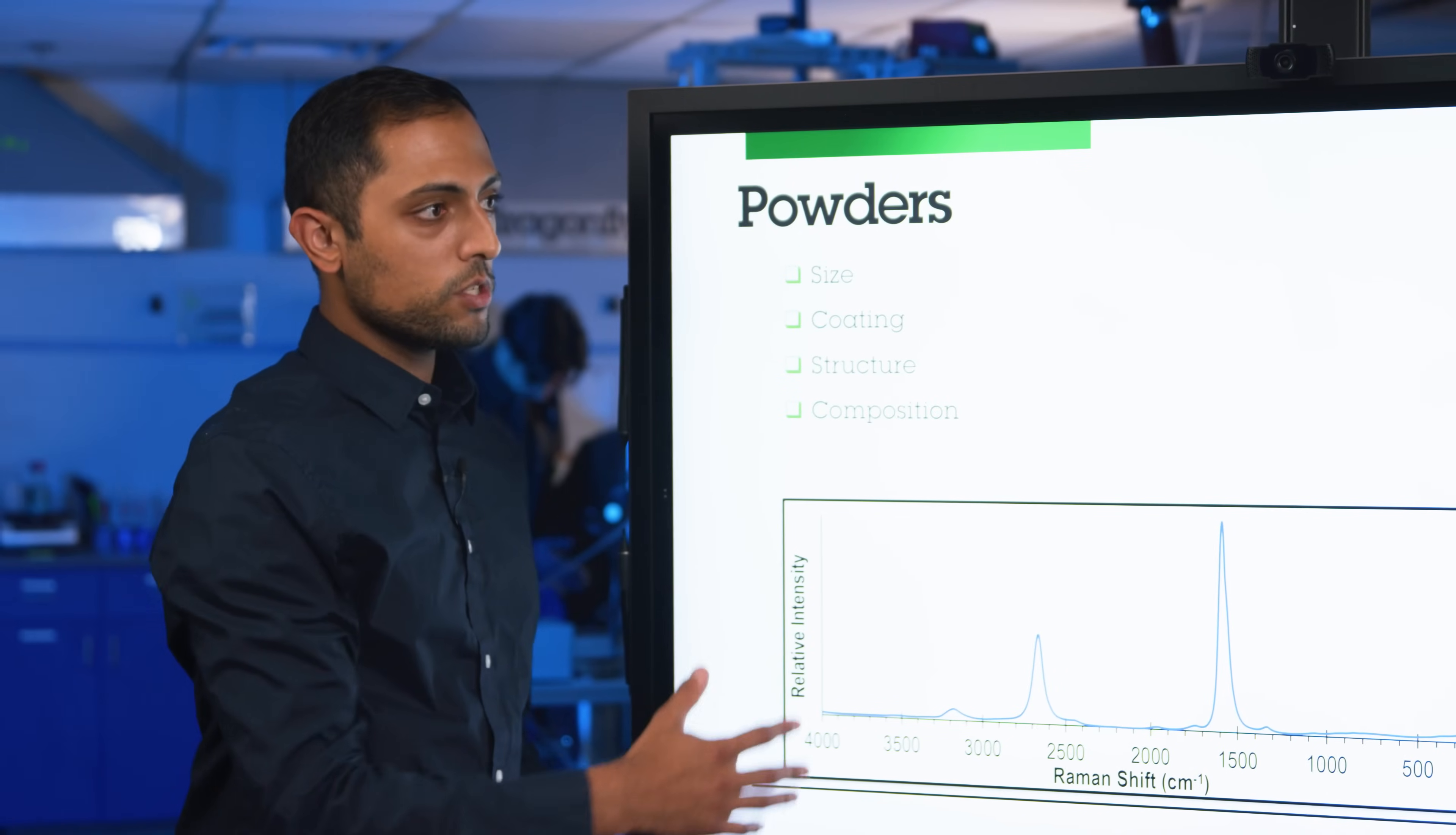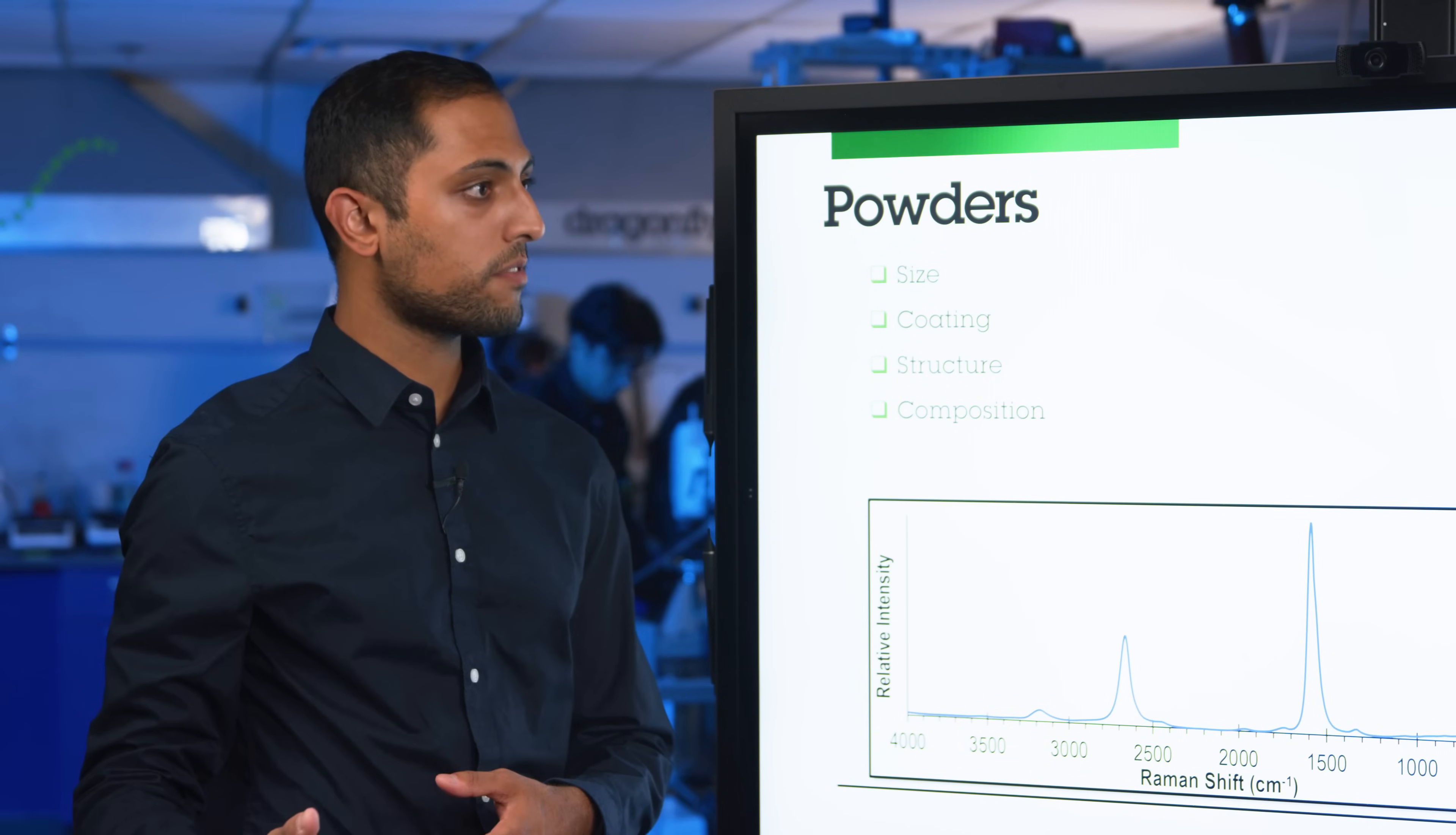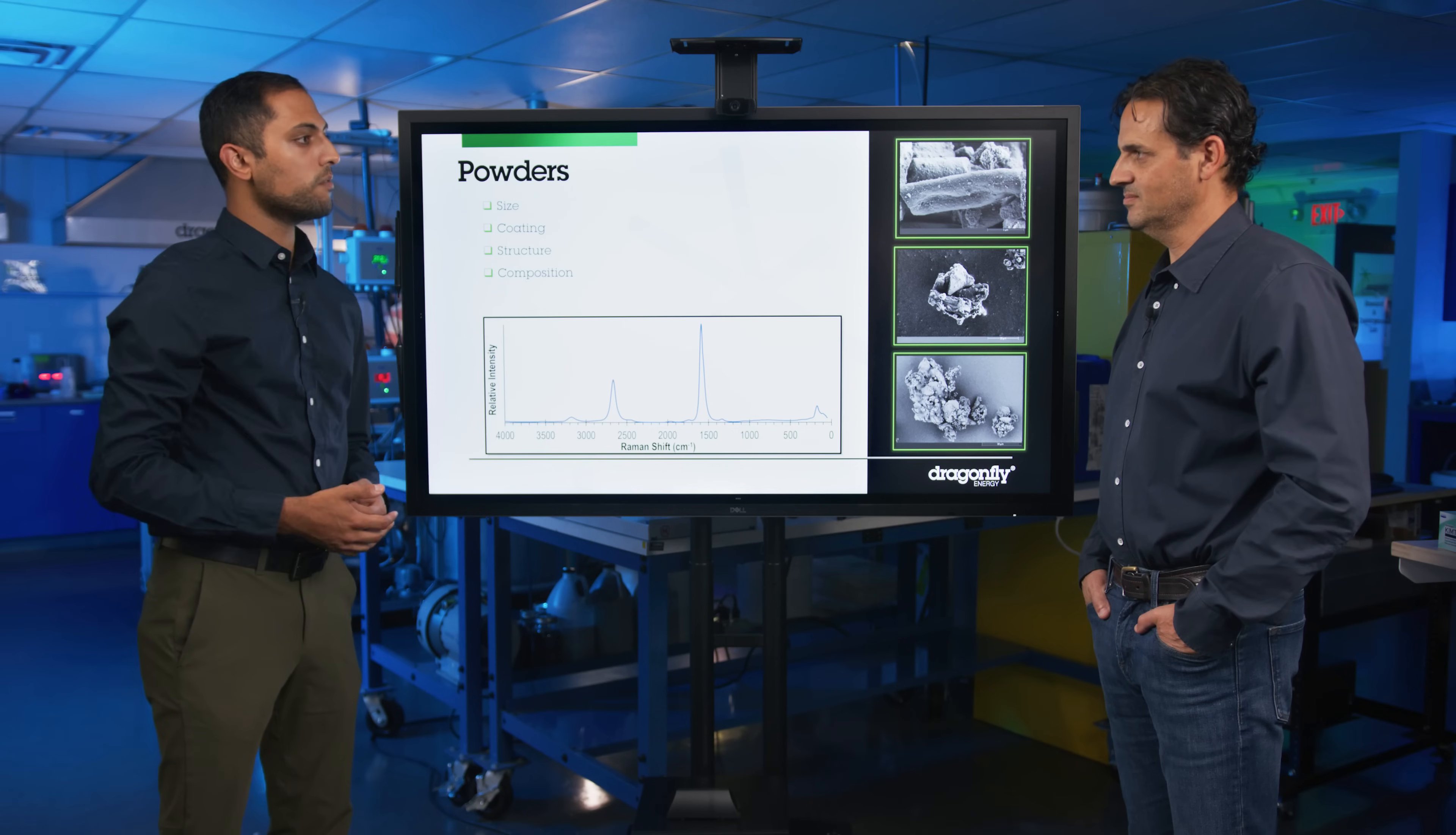And what you see here is a Raman spectra. And Raman spectroscopy really allows us to study the carbon in greater detail. So if we want to understand how well is the LFP carbon coated for charging and discharging purposes, or how much conductive carbon do we have in an anode tape versus ordered graphite, that's what Raman can be really helpful for understanding.